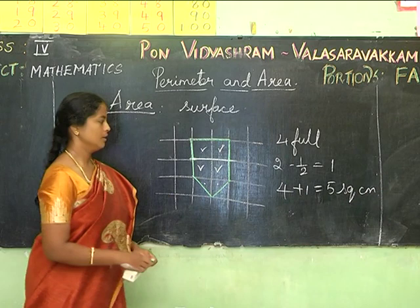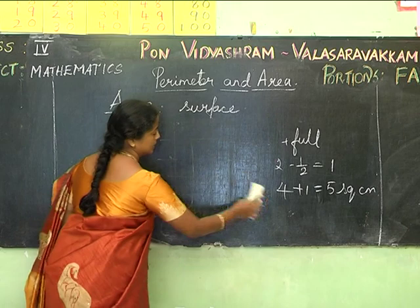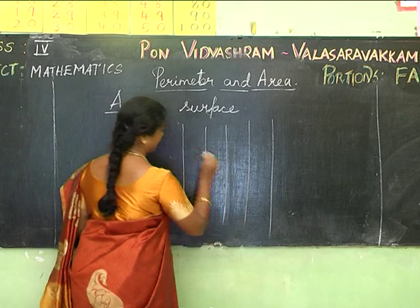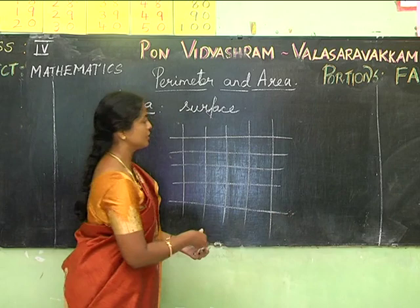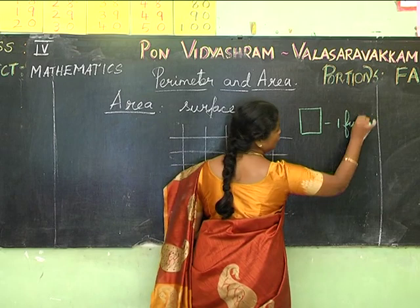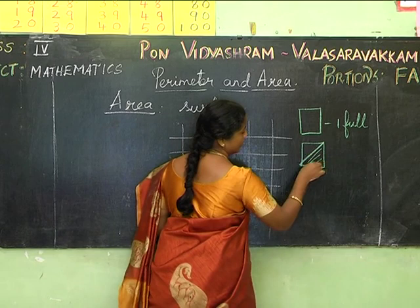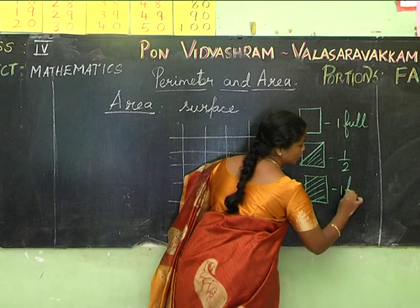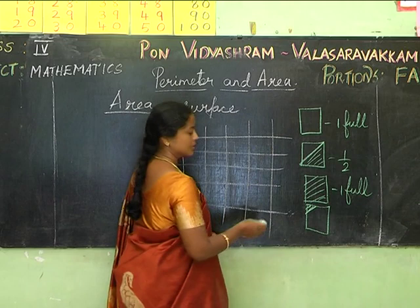Now let's see how to find the area of irregular shapes. Before going to the shape, some instructions: if a square is fully covered, it counts as 1 full square. If it is shaded halfway, it counts as half a square. If three-quarters of the square is covered, it is counted as 1 full square. If only a very small part is within the area, it is neglected.